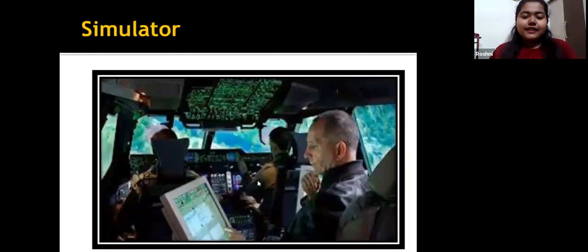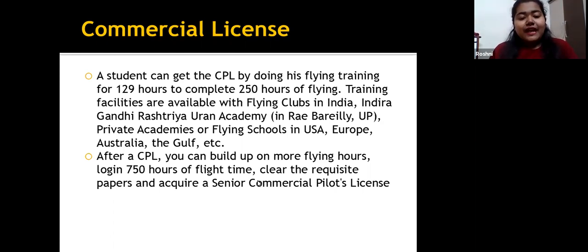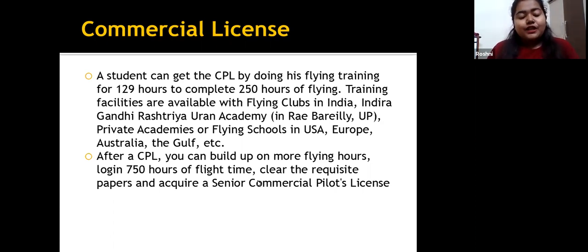This is an example of a simulator. A student can get a CPL by doing flying training for 129 hours to complete 250 hours of flying. Training facilities are available with flying clubs in India, including the Indira Gandhi Rashtriya Udan Academy in Rai Bareli, UP, as well as private flying schools in the USA, Europe, Australia, the Gulf, etc. After a CPL, you can build up more flying hours — log 750 hours of flight time, clear the requisite papers, and acquire a senior commercial pilot's license.